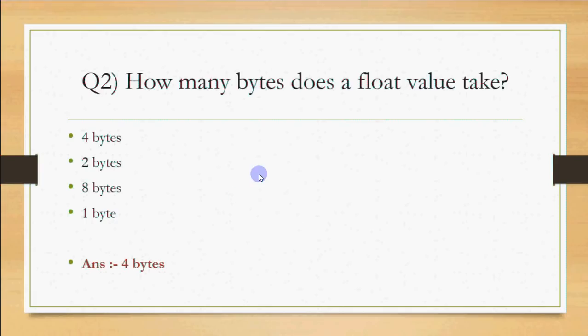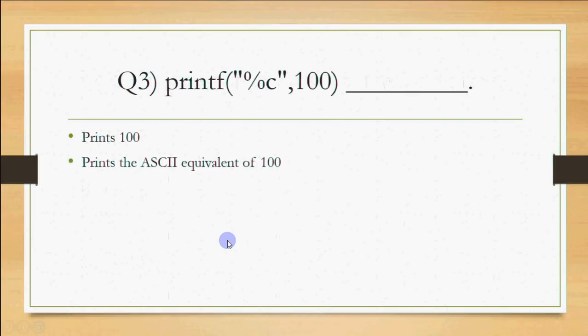The third question is: printf("%c", 100) — will it print 100, print the ASCII equivalent of 100, print any garbage value, or none of the above? Here, %c means what we are printing will be a character. So 100 cannot print directly because 100 is an integer value; for an integer you use %d. So %c means whatever you are printing it will be treated as a character value.